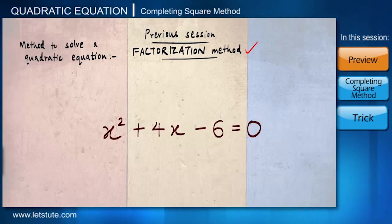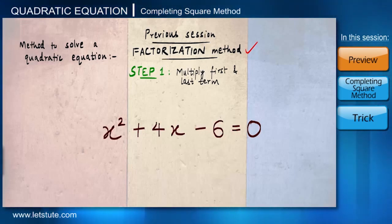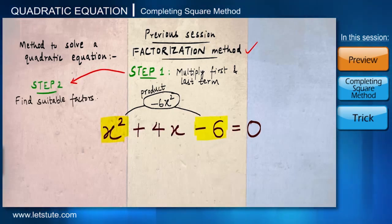So we know all the rules we have to follow under this method. Step 1 is to multiply the first term of the equation with the third term. So we will multiply x² with -6. And the product which we will get is -6x². Step 2 is to find the suitable factors for this particular product.